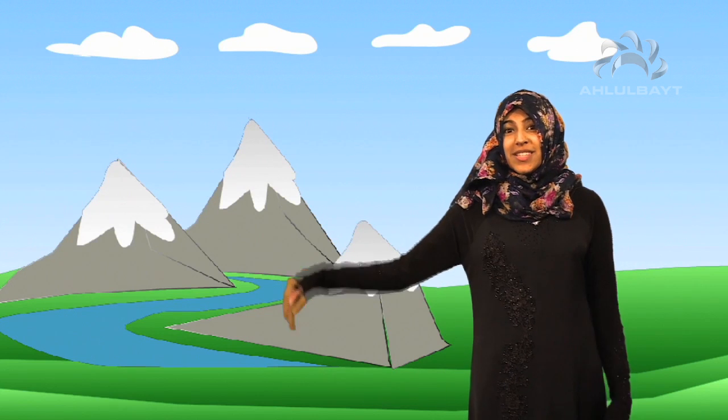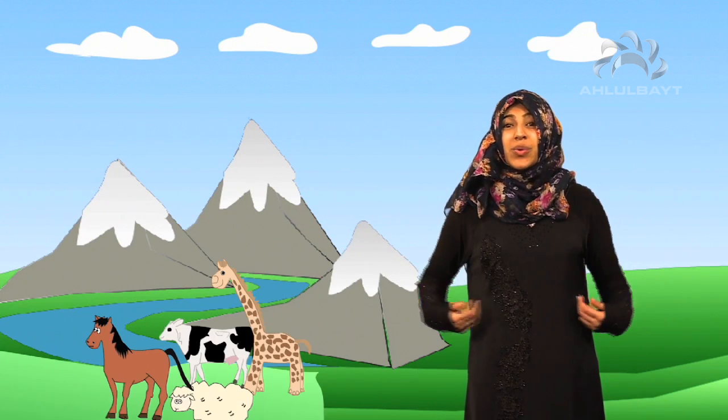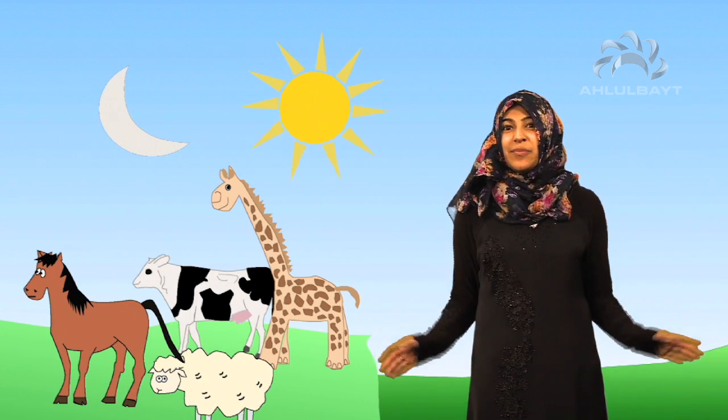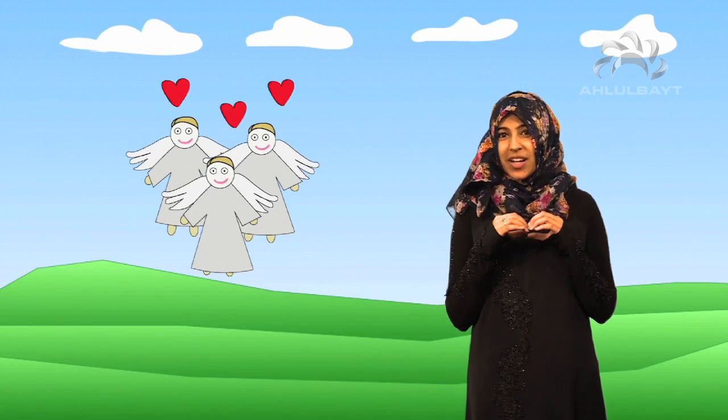Allah made the mountains and he made the seas. He made all of the animals. He made the skies, he made the moon and he made the sun. He created the heavens and the beautiful angels with pure hearts who did everything that he commanded.